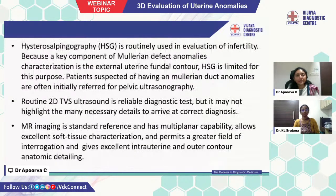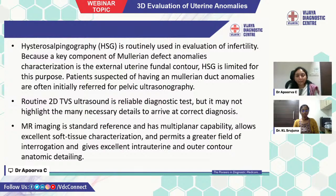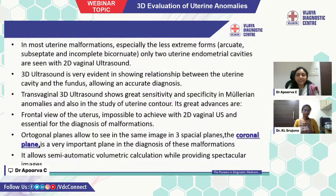Regarding the imaging standard of reference: HSC is routinely used in evaluation of infertility, but a key component of Mullerian duct anomaly characterization is the external uterine fundal contour, and HSC is limited for this purpose. Patients suspected of having Mullerian duct anomalies are often initially referred for pelvic ultrasound. A routine 2D TVS ultrasound is a reliable diagnostic test, but it may not highlight many necessary details to arrive at the correct diagnosis. MR imaging is the standard reference, has multi-planar capability, allows excellent soft tissue characterization, and gives excellent intrauterine and outer contour anatomic detailing. In most uterine malformations, especially the less extreme forms, only two uterine endometrial cavities are seen with 2D vaginal ultrasound.